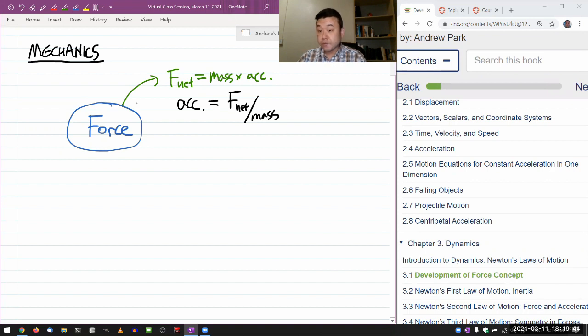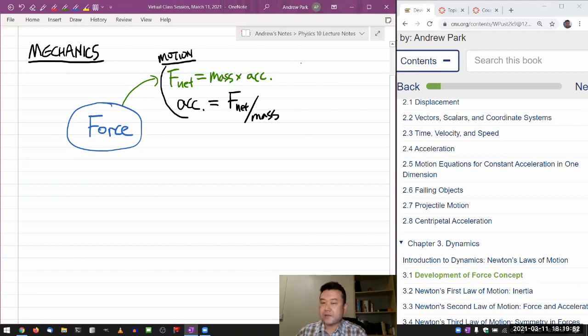Once we know acceleration of something, then we can look at how its velocity changes. Once you know how velocity of something changes, then you can look at how its position changes. And you might remember from Section 2.5 how we looked at some example of that, that if you have a constant acceleration, how from that you get all the other motion equations. So having that chain of causation in mind, force connects to all the things that you've seen in motion.